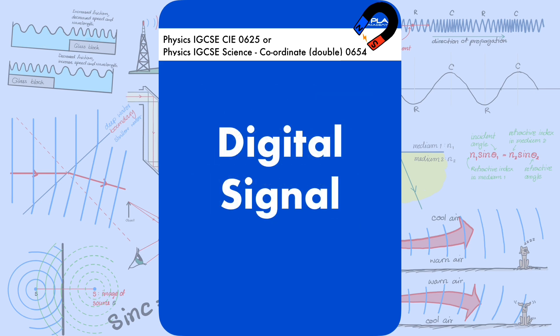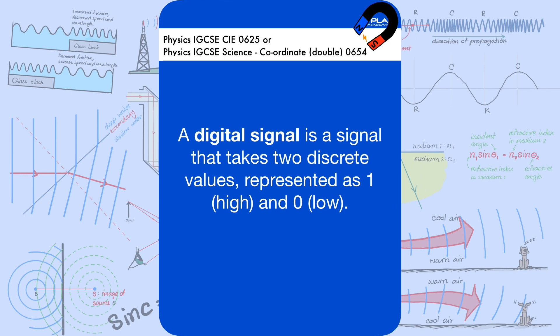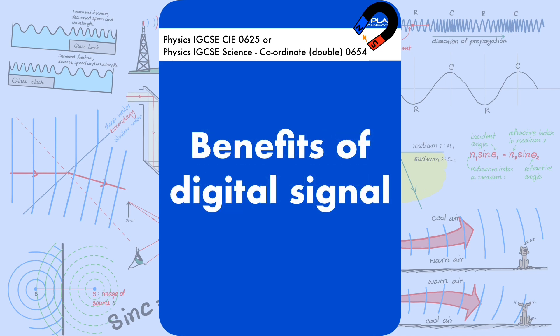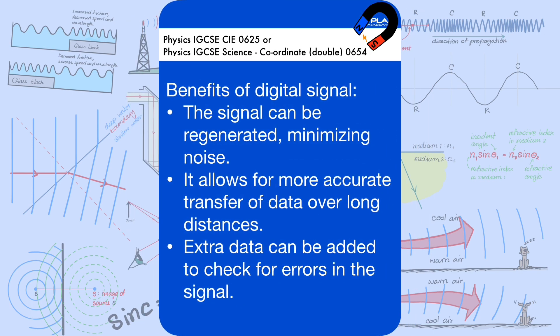A digital signal is a signal that takes two discrete values, represented as 1 (high) and 0 (low). Benefits of a digital signal include: the signal can be regenerated, minimizing noise; it allows for more accurate transfer of data over long distances; and extra data can be added to check for errors in the signal.